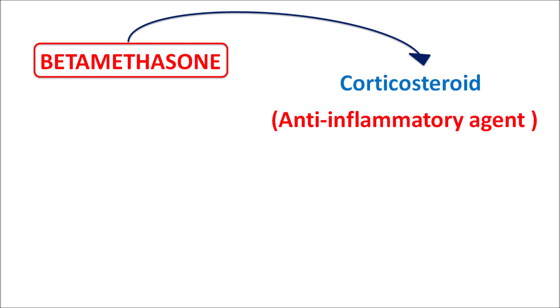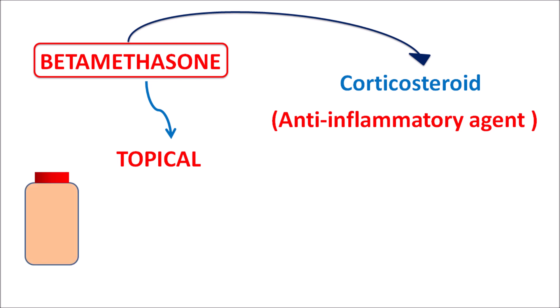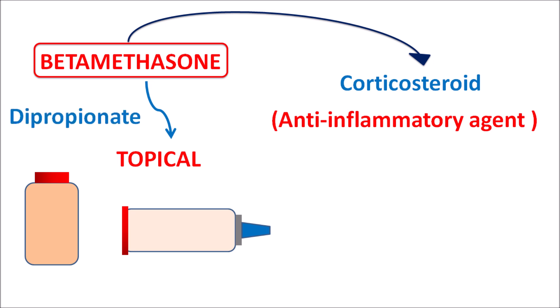This drug can be used by topical route in the form of lotion, cream, gel, as well as foam. Betamethasone forms a diester with propionic acid, so it is available as the dipropionate ester, which is more potent and used for topical purposes. Another ester form, betamethasone valerate, is somewhat less potent compared with the dipropionate. In many topical preparations, betamethasone dipropionate is present as the potent corticosteroid.